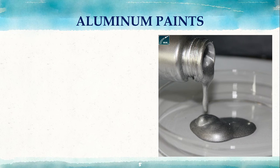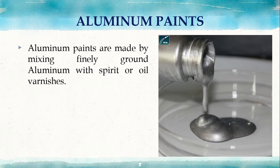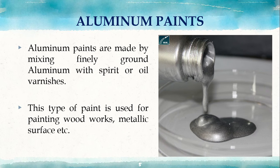The first type is aluminum paint. Aluminum paints are made by mixing finely ground aluminum with spirit varnish or oil varnish. Spirit varnish makes the drying period shorter, and oil varnish imparts slow drying. This paint is used for woodworks, metallic surfaces, etc. The layer hardens by evaporation of the spirit or oil. Aluminum paint is waterproof, resistant to electricity, corrosion, and weathering, visible even in the dark, and gives a good appearance.